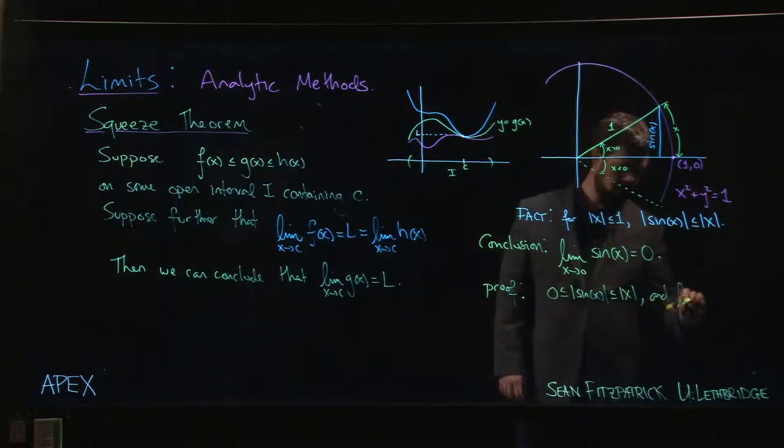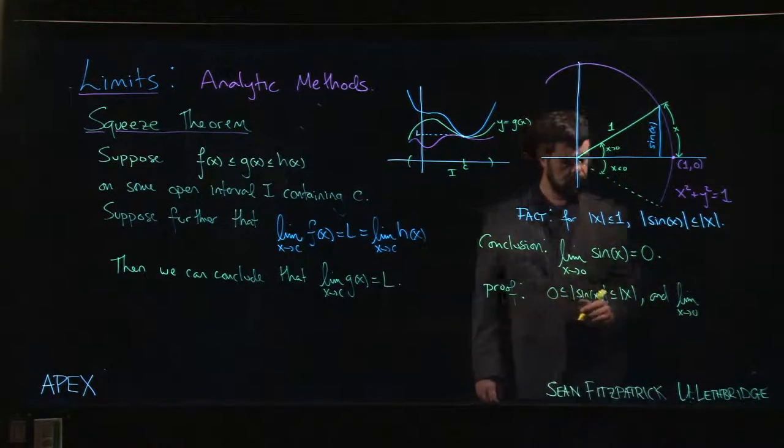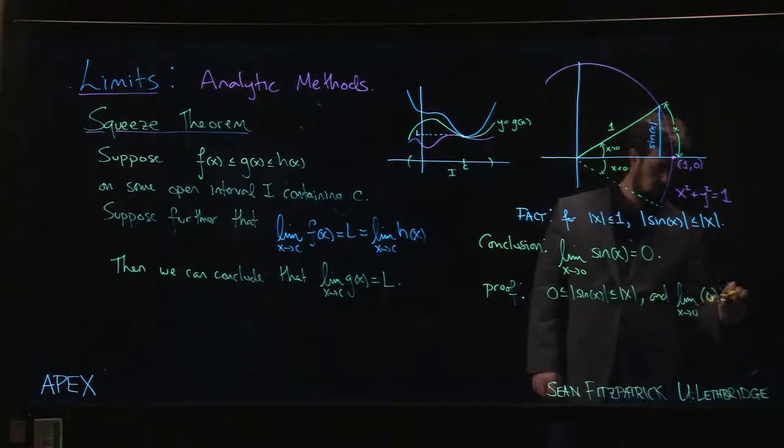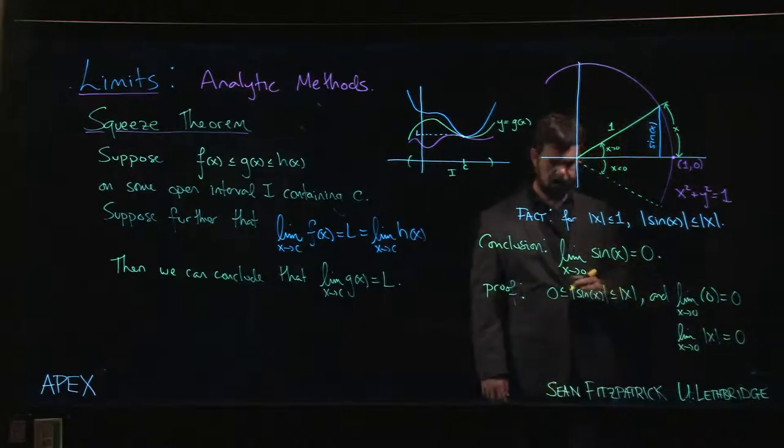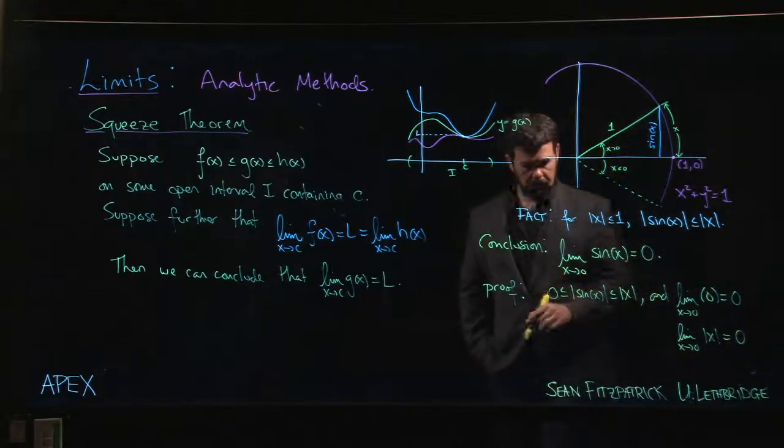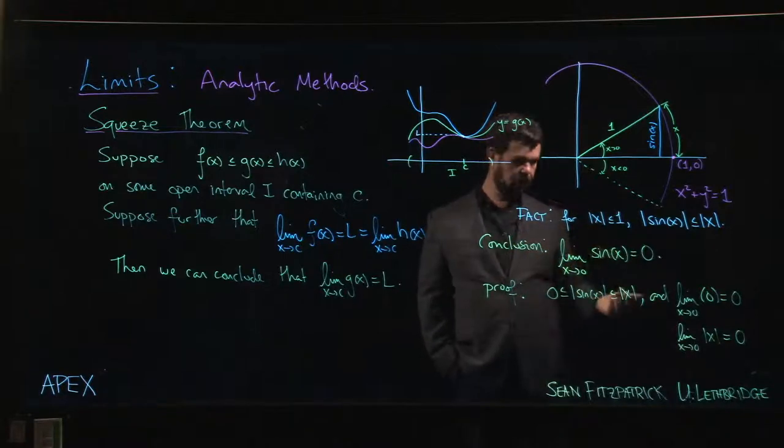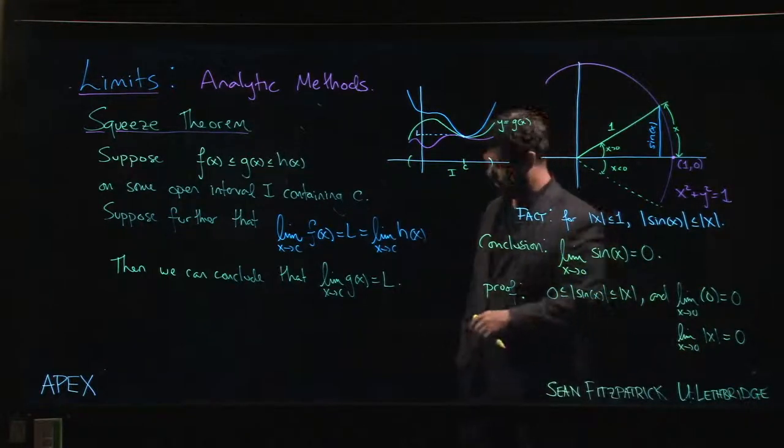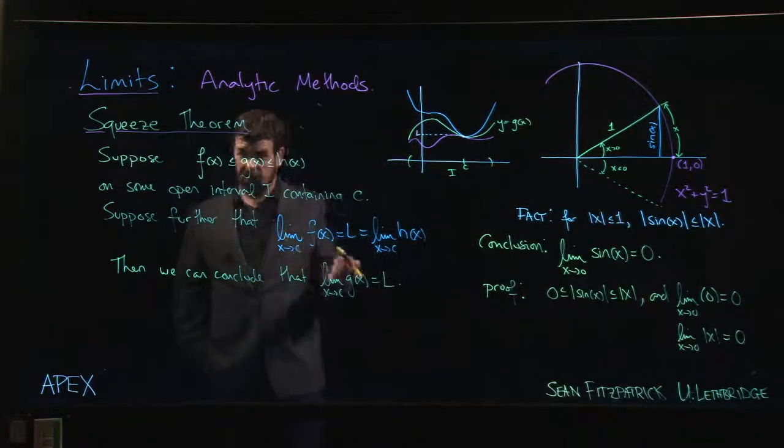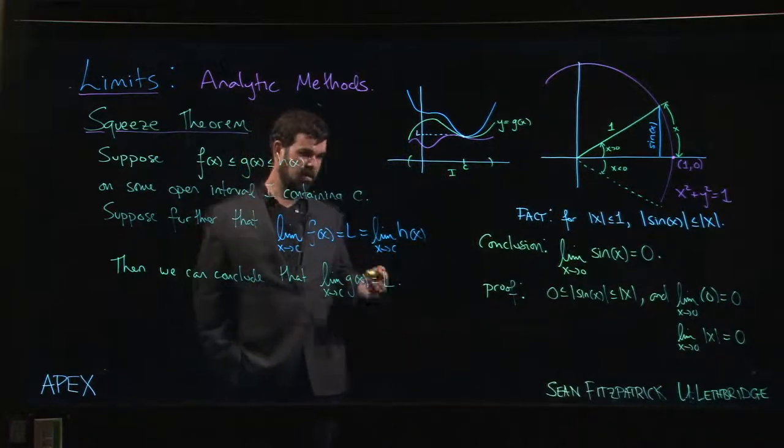And we know that the limit as x goes to zero of zero is zero. We know that the limit as x goes to zero of the absolute value of x is zero. And so now we know that the limit in the middle also must be zero. And of course, there's the absolute value there, but if the absolute value of the limit is zero, the limit itself must be zero. You can deal with the absolute value.